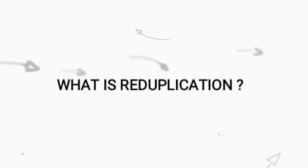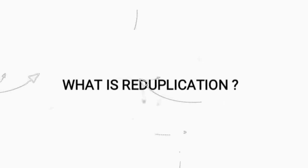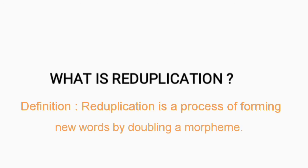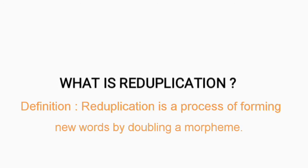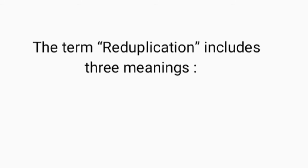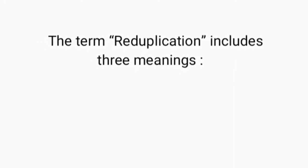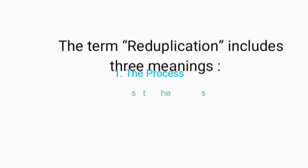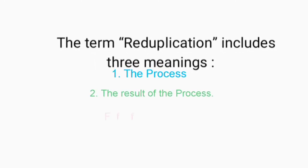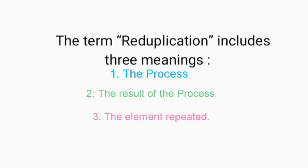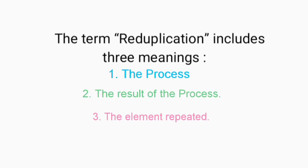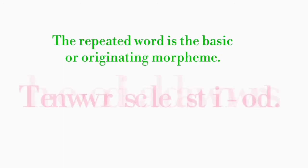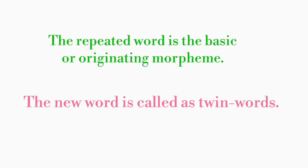So, what is reduplication? Reduplication is a process of forming new words by doubling a morpheme. The term reduplication includes three meanings: first, the process; second, the result of the process; and third, the element repeated. The repeated word is the basic or originating morpheme, and the new word is called a twin word.